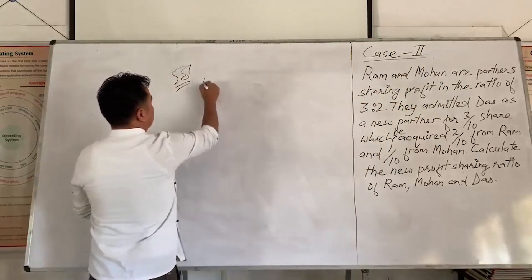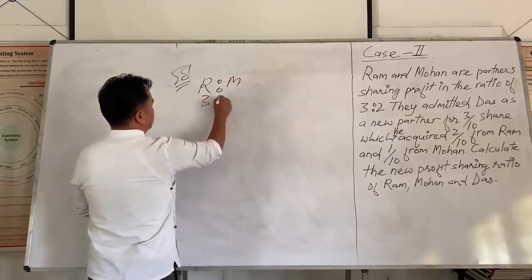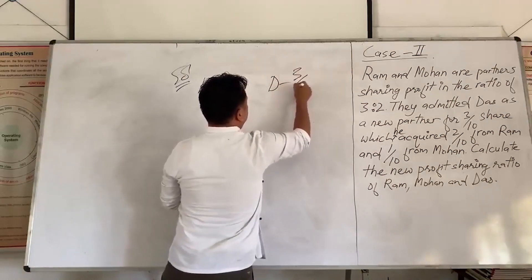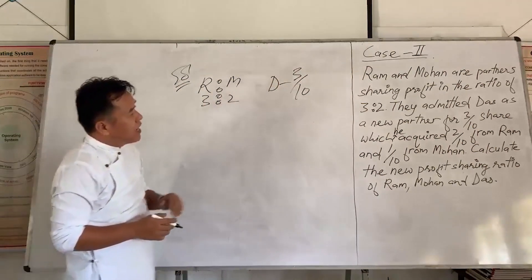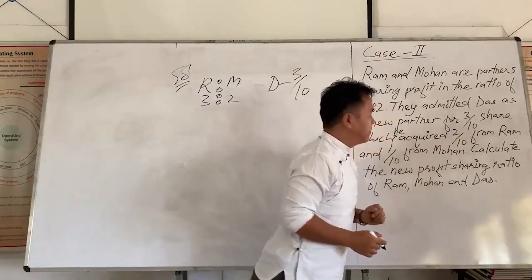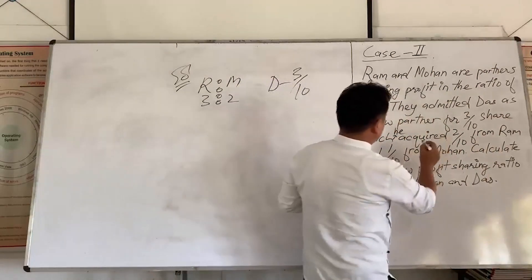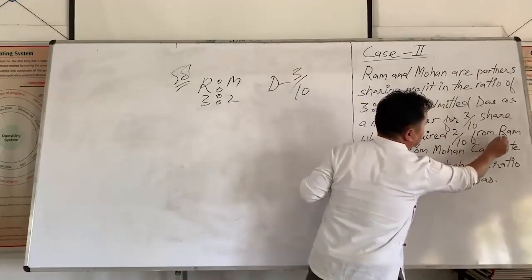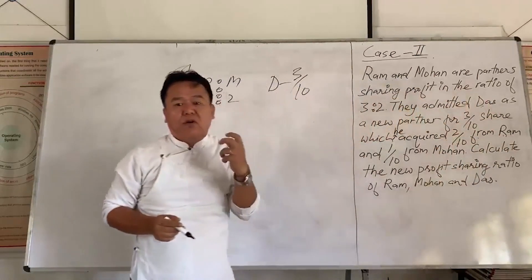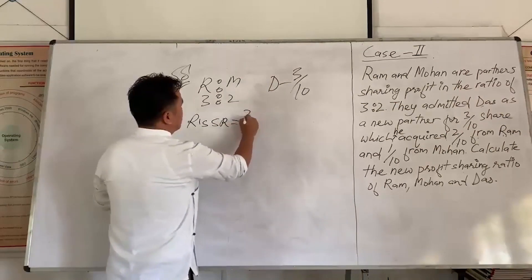Here Ram and Mohan are partners. Their profit sharing ratio is 3 to 2, and they admit Das with 3 by 10 share. Information is given with regard to the sacrifice made by the old partners. Since Das gets 2 by 10 from Ram, it means Ram sacrifices 2 by 10 in favour of Das. So Ram's sacrifice ratio is 2 by 10. Since Das also gets 1 by 10 from Mohan, it means Mohan sacrifices 1 by 10 in favour of Das. So the sacrifice ratio of Mohan is 1 by 10.